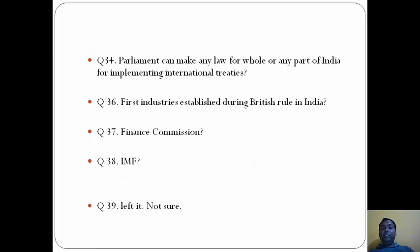Question 34: Parliament can make any law for whole or any part of India for implementing international treaties without the consent of any state. Parliament is free to do this, so the option here will be D.